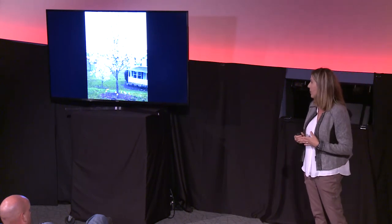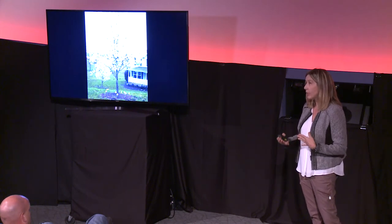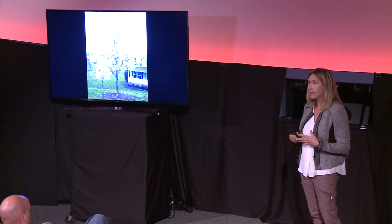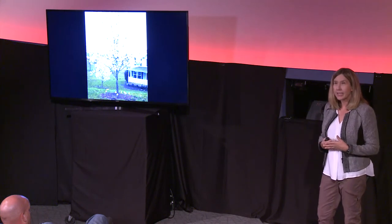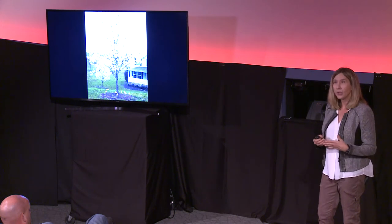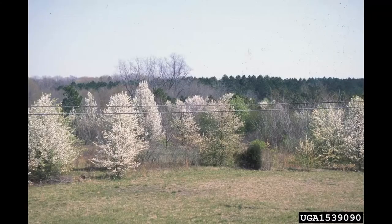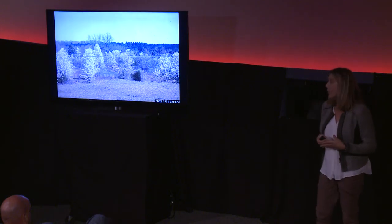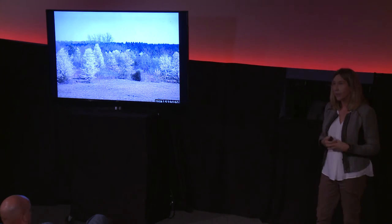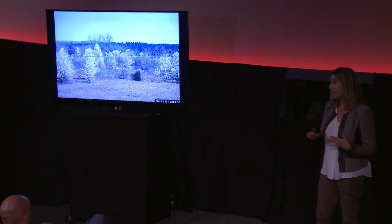The Bradford pear was initially thought to be sterile and incapable of escaping into the wild, but in the 1980s other pear varieties were introduced and began cross-pollinating. Suddenly Bradford pears started producing large quantities of berries and spreading into wild landscapes. Across the U.S., including along University Parkway in springtime, you can see Bradford pears growing in thorny, dense stands so thick they're crowding out native species — making them a classic example of a non-native becoming invasive.